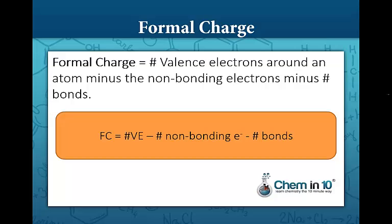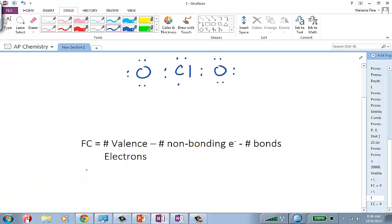Remember the formal charge is the number of valence electrons minus the number of non-bonding electrons minus half the number of bonding electrons, or I like to call that minus the number of bonds. So for each oxygen, each oxygen comes with six valence electrons minus the number of non-bonding electrons, which are these, so that would be six, minus the number of bonds, and each oxygen has one bond. So each oxygen would have a negative one formal charge.